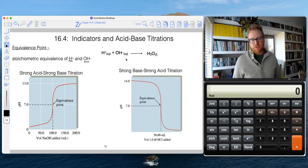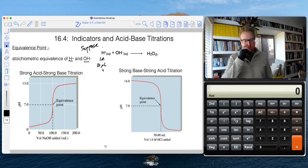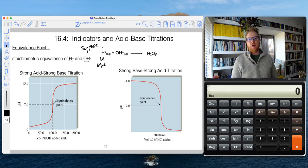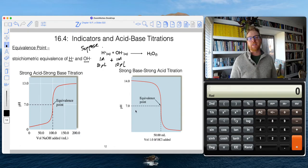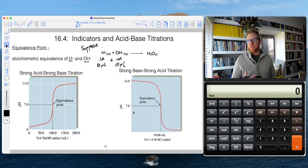So for example, suppose we had one molar H plus and maybe 10 milliliters of that. For that simple example, if I wanted to have stoichiometric equivalents, I would have to add one molar hydroxide and 10 milliliters, right? Because those two volumes and concentrations would give us the same number of moles of H plus and the same number of moles of OH minus.